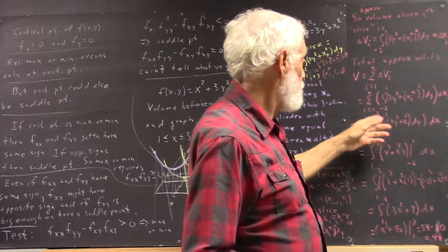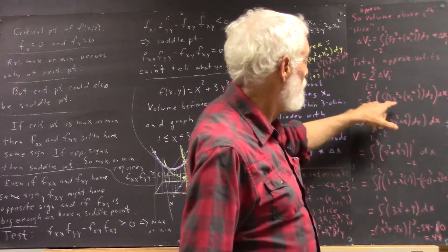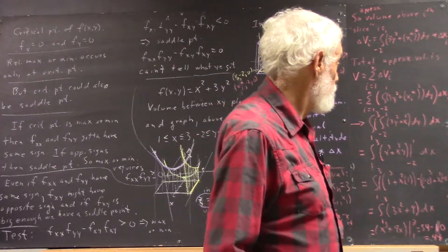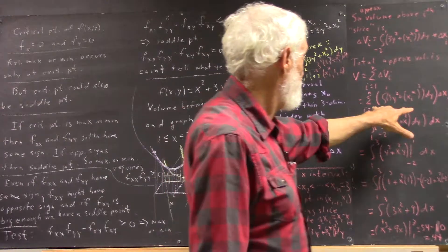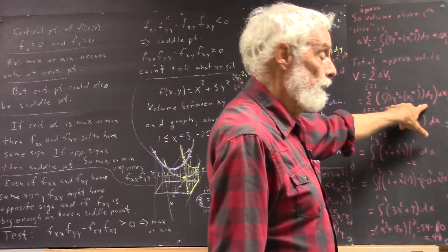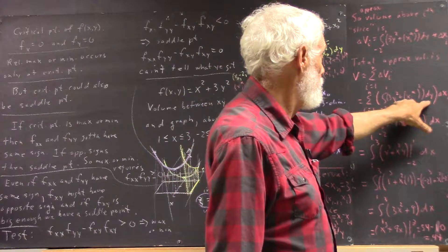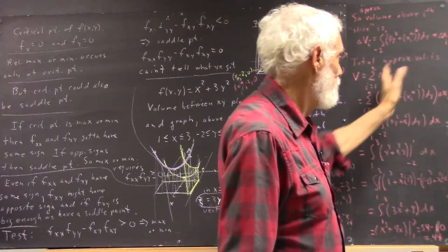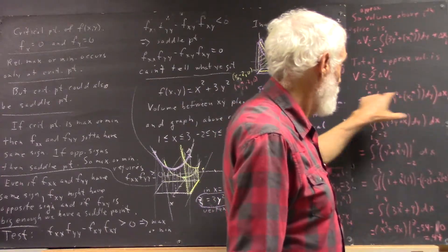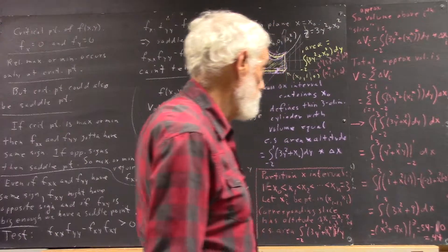And that, then, we could write as the sum from i equals 1 to n of, well, there's the integral that gives us our delta v sub i right there. And then that's multiplied by, well, this is it. We've already seen it. I'm not going to explain it again.